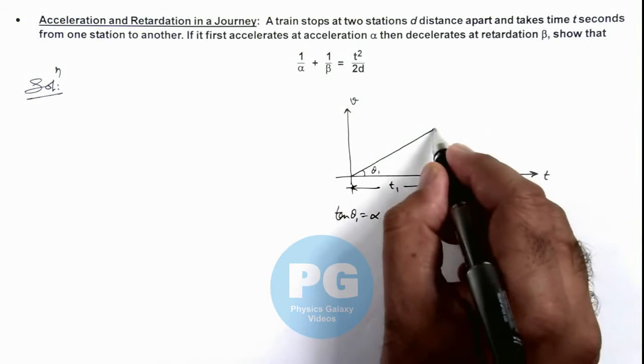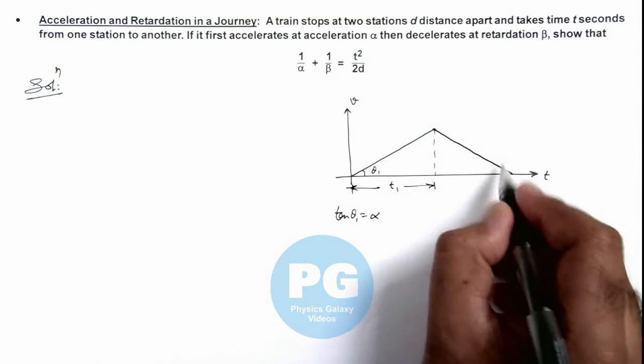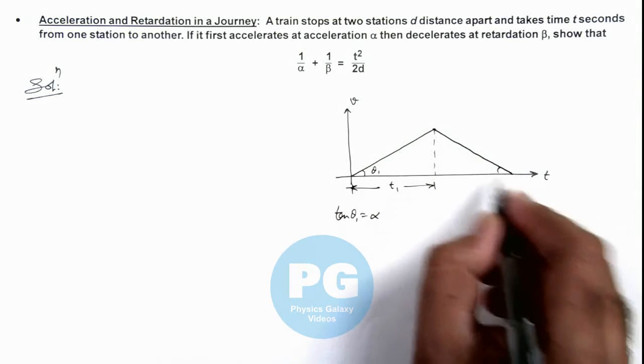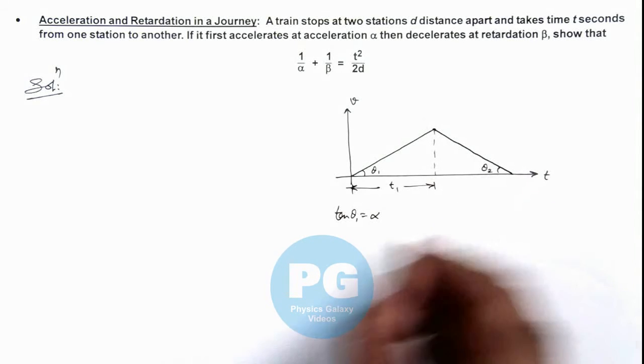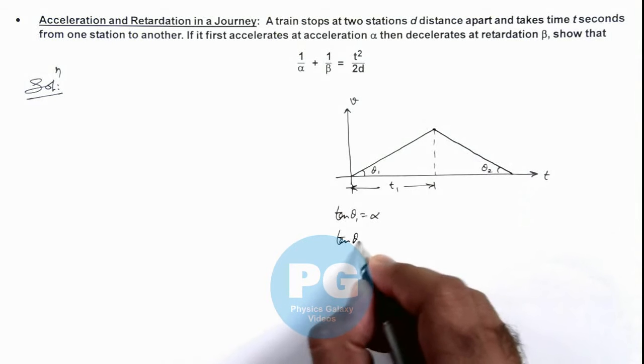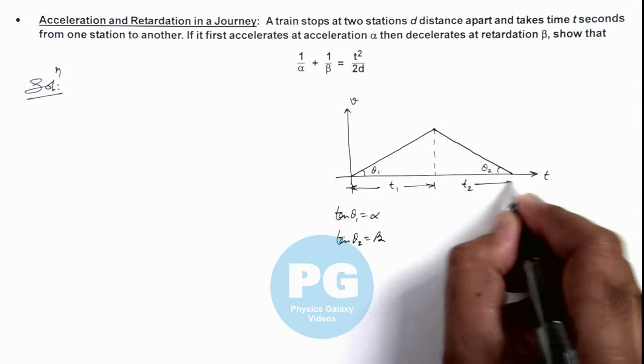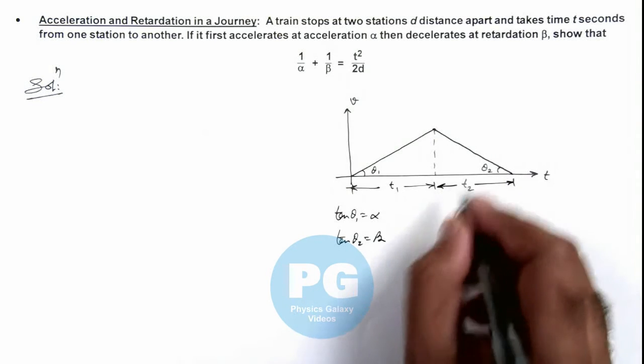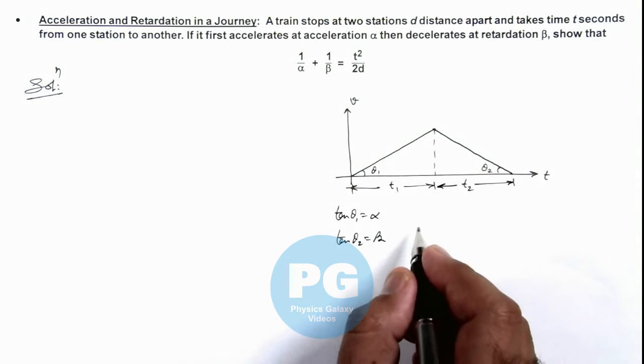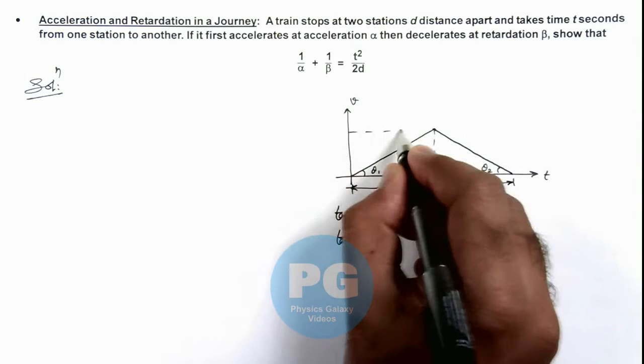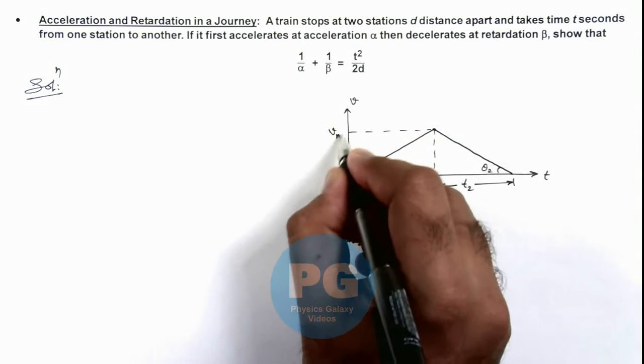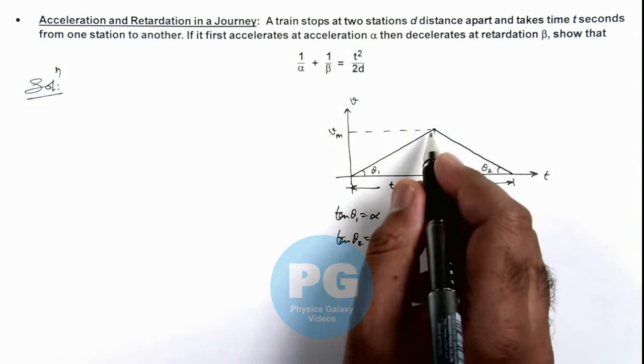Then it retards, so this will be a downward sloping line. If this angle is θ₂, we can write tan θ₂ equals β, because the retardation here is β. We consider t₂ is the time of retardation. In this motion, vₘ is the maximum speed attained by the train.